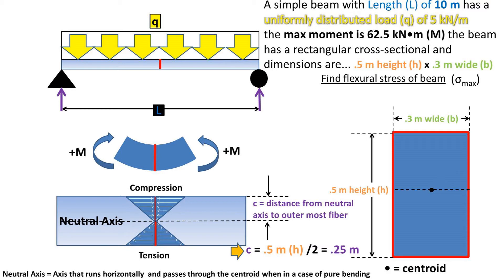The value for the distance from the neutral axis to the outermost fiber will be designated with the letter C, and is at 0.25 meters away from the neutral axis.